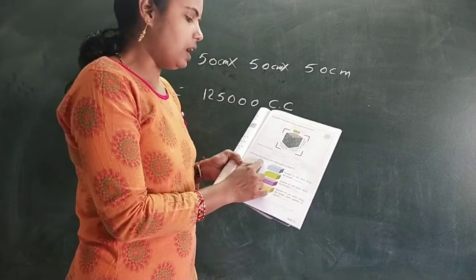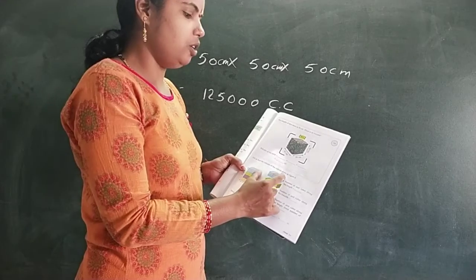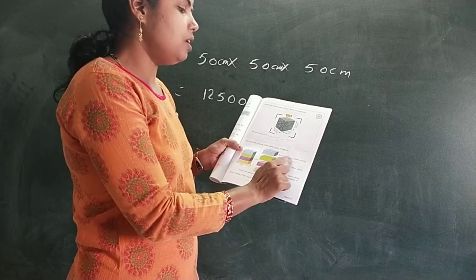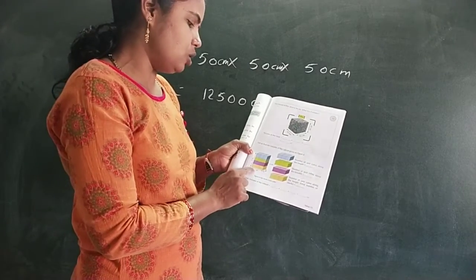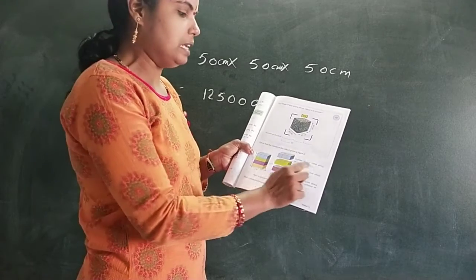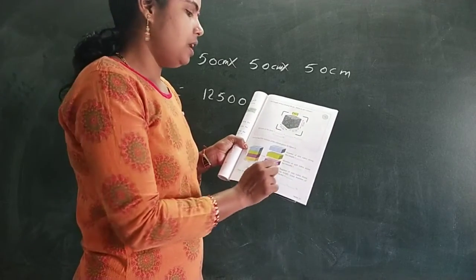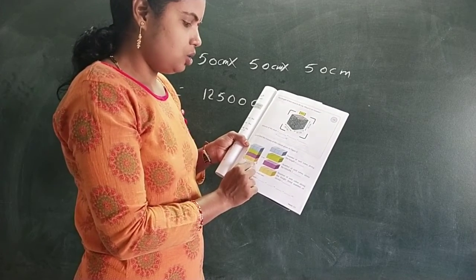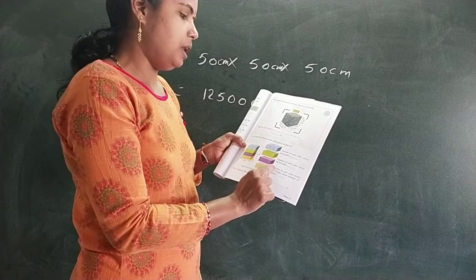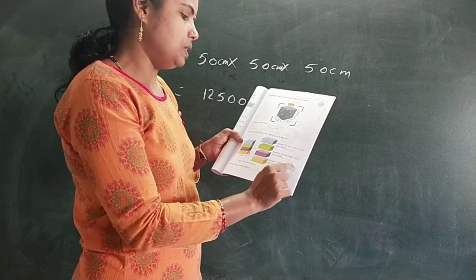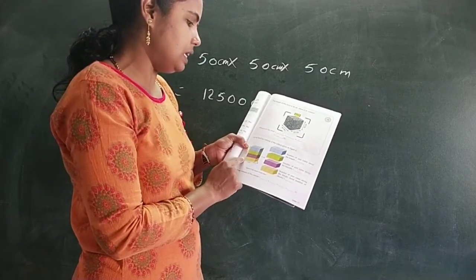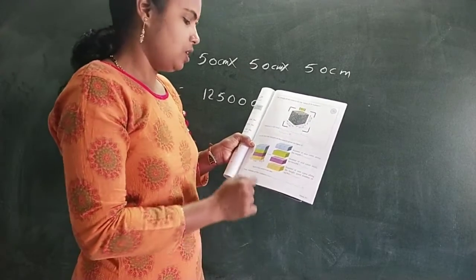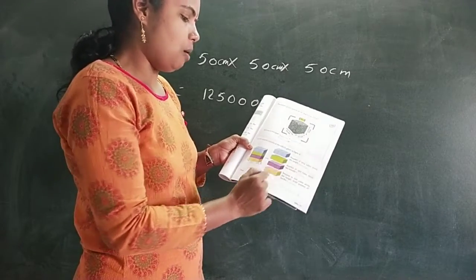Next. Let us find the volume of the cuboid given in figure four. See here, figure four is given. Number of unit cubes along the length — how many unit cubes along the length? Three. Number of unit cubes along the breadth — how many cubes are there? Two. Number of unit cubes along the height — four. So the volume of the cuboid: length — how much? Three.